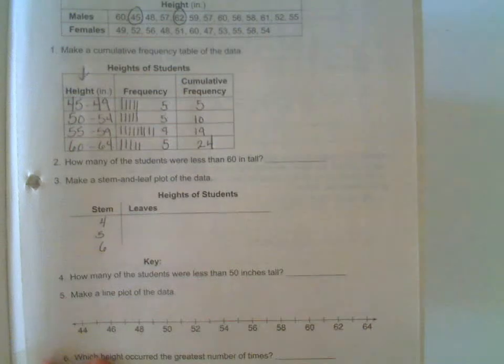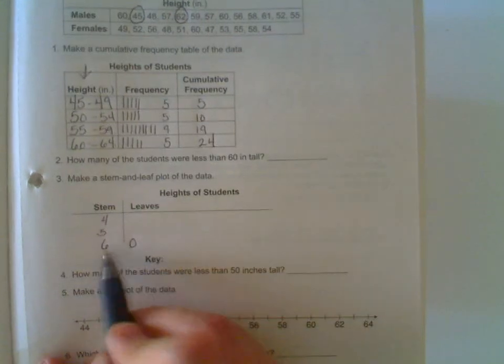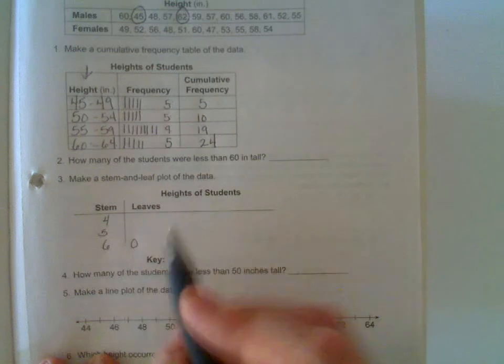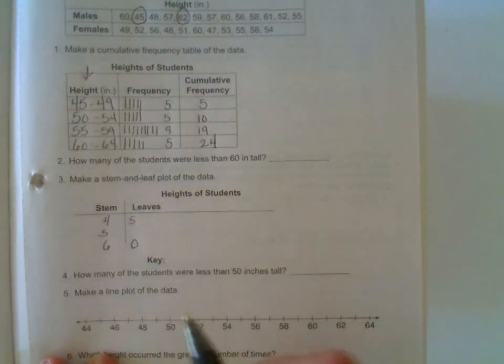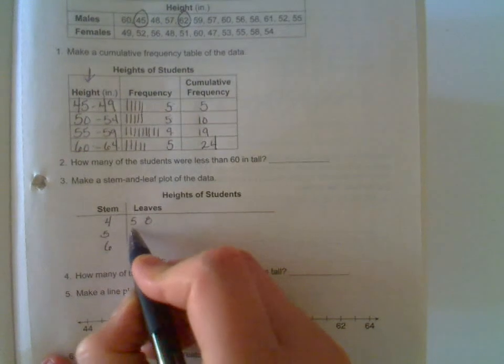So for instance, the first number being 60, I'm going to go next to the 6 and write a 0, and that 6|0 means 60. The next one is 45, so next to the 4 I'm going to write a 5, and that 4|5 means 45. You're going to have to go through and do that now for all of the numbers.